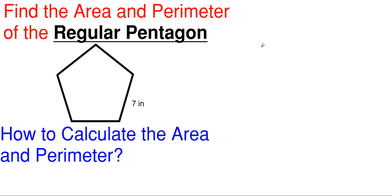A pentagon is just a shape that has five sides to it. A regular pentagon is a pentagon that has all of its five sides being equal in length.